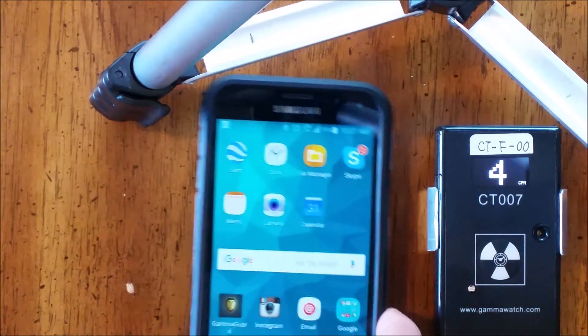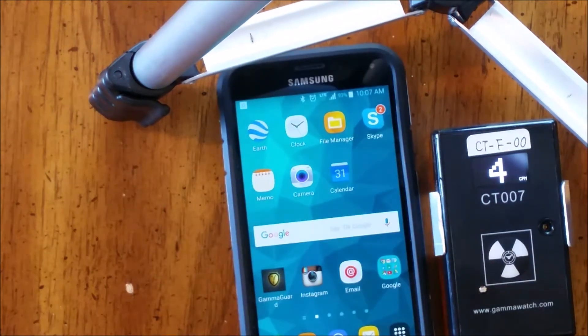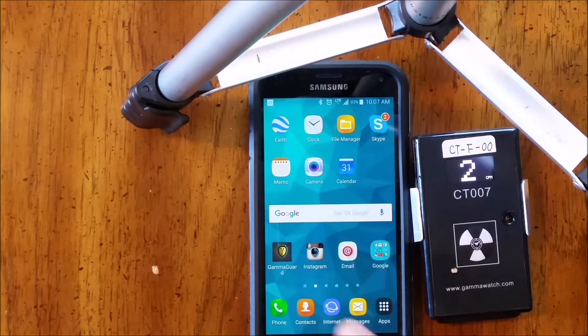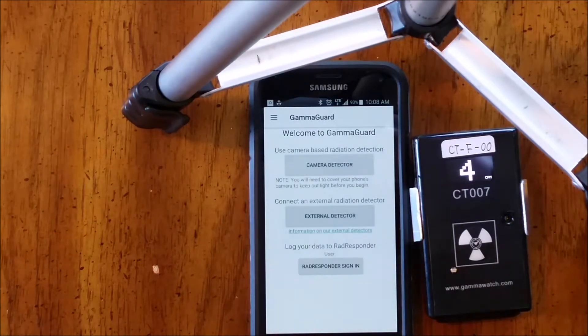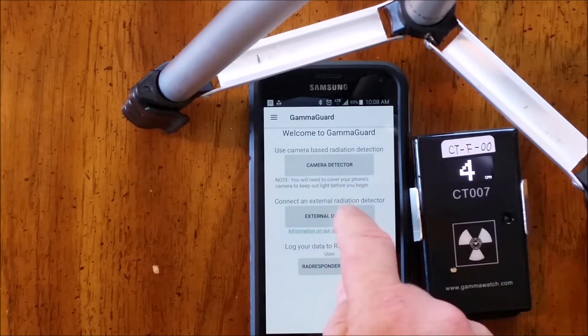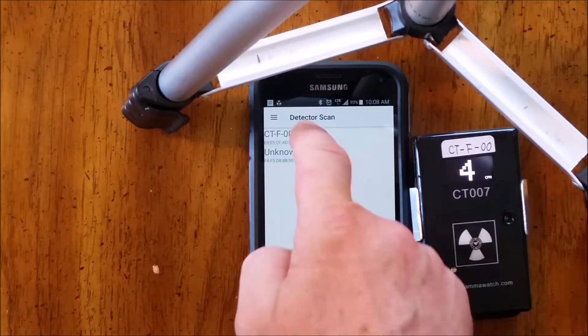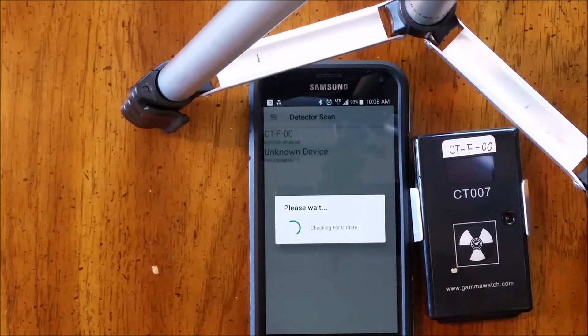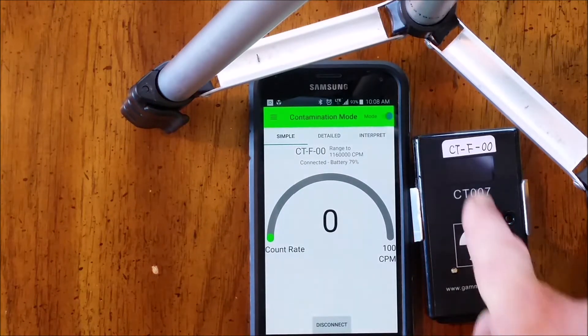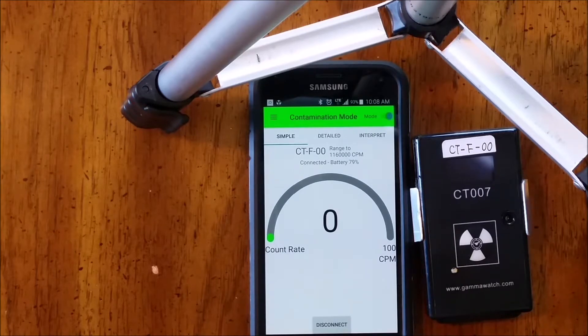Let's have a quick look at our companion app. Open Gamma Guard, select external detector, and tap the instrument that we want it to connect to. That turns off the screen on the local display to save power.